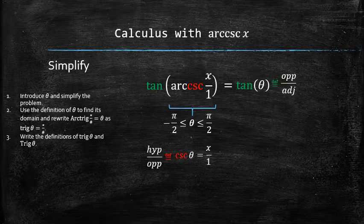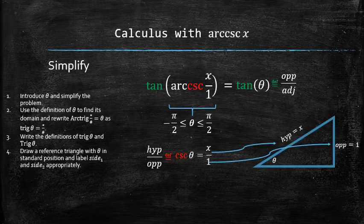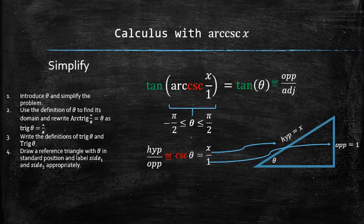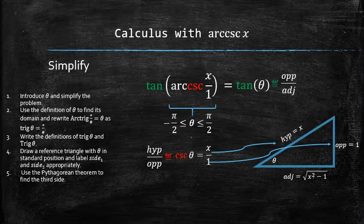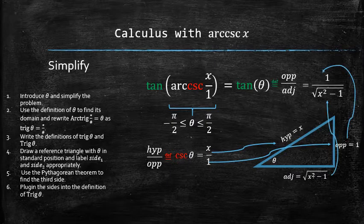Next, we recall the definitions of both involved trigonometric functions. Now, we can draw a reference triangle with theta in standard position and label the sides appropriately. We then use the Pythagorean theorem to find the missing side. And finally, we plug in the needed sides into the expression in question.